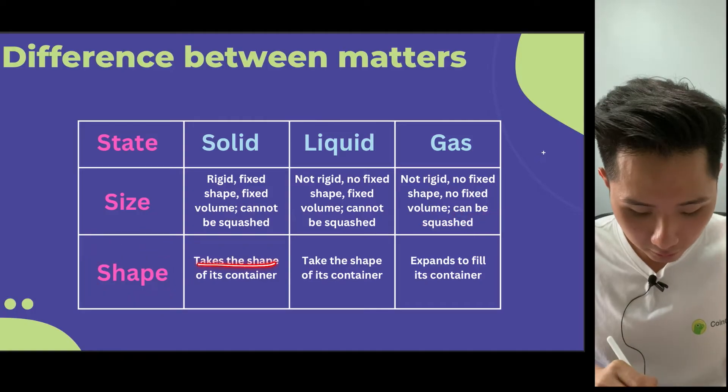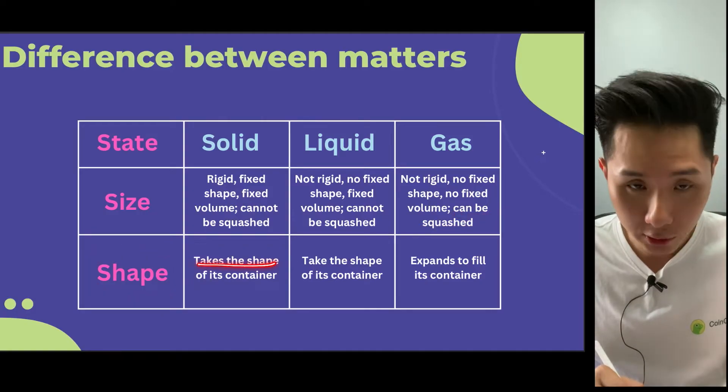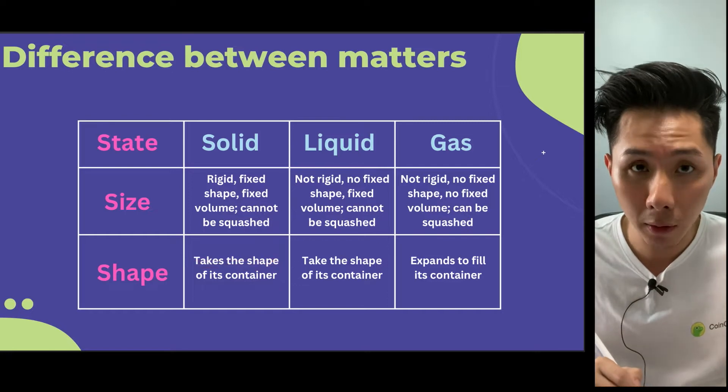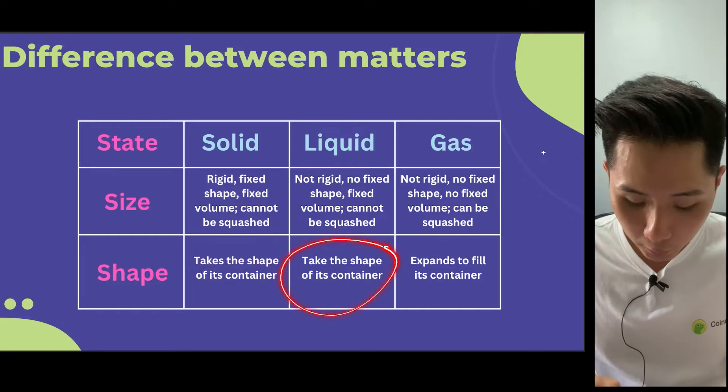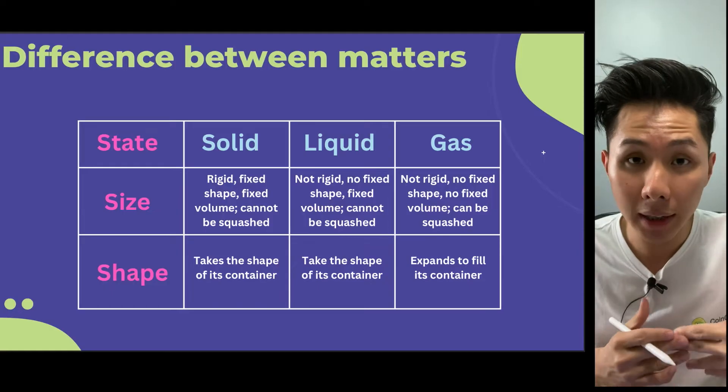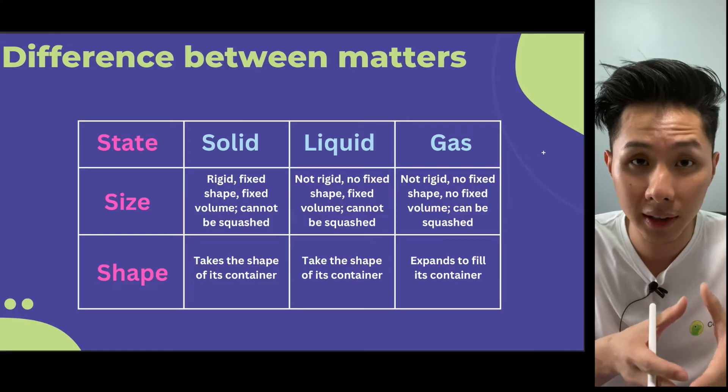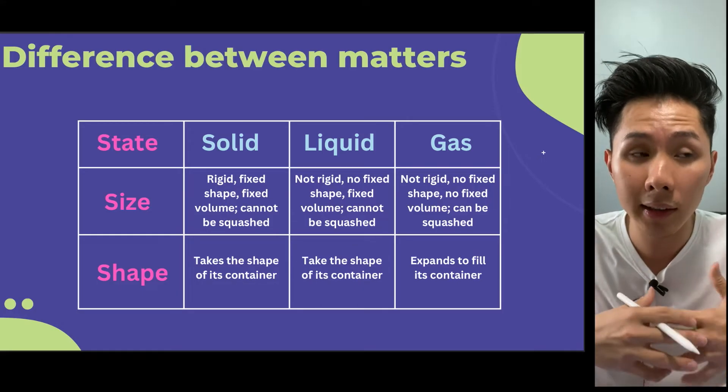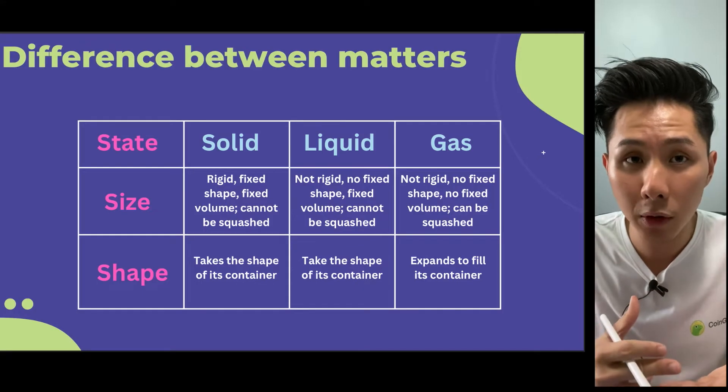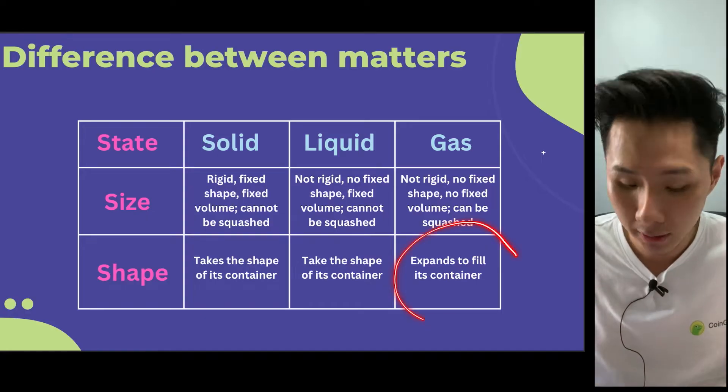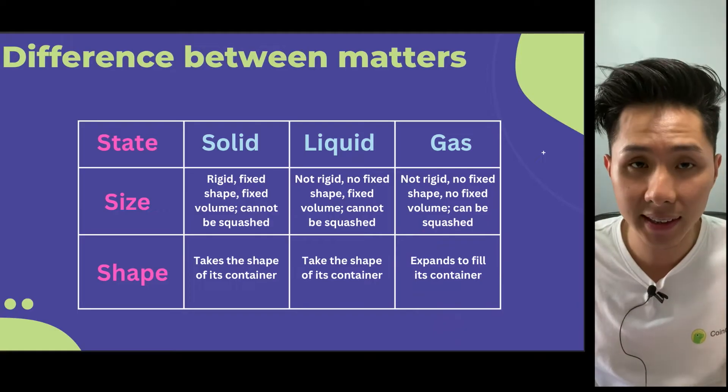And as for the shape, you can't really change the shape of a solid unless you deliberately exert a lot of force on it. Whereas liquid takes over the space of a container. So if you have a cylindrical container, they're going to be in cylindrical shape. But if you have a cuboid shape, they're going to fill the cuboid instead. Same goes to gas.